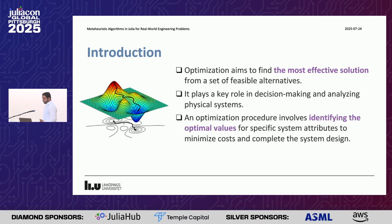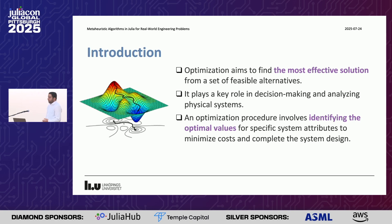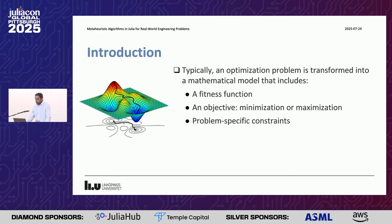We will start with some theoretical introduction about what is optimization. Optimization can be defined as the process of finding the most effective solutions from a set of feasible alternatives. It plays a role in decision-making and analyzing physical systems. Optimization involves identifying the optimal values for specific system attributes to minimize or maximize — for example, minimizing cost in completing system design.